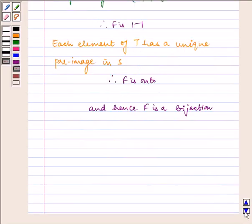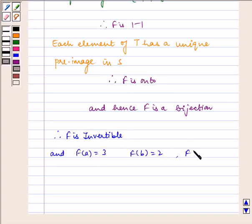Now, since f is a bijection, therefore f is invertible. And f(a) = 3, f(b) = 2, and f(c) = 1. Which implies f⁻¹(3) = a, f⁻¹(2) = b, and f⁻¹(1) = c.